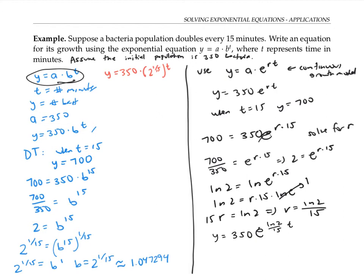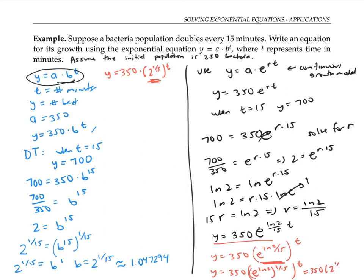I claimed these two equations are actually the same thing, just looking different. The way to see that is: starting with this equation, I can rewrite e to the (ln(2)/15) to the t. I claim that quantity is the same as 2 to the 1/15. In fact, e to the ln(2) to the 1/15 — every time I take a power to a power, I multiply exponents — and e to the ln(2), well e and ln undo each other. So that's just 350 times 2 to the 1/15, to the t. The equations are really the same.